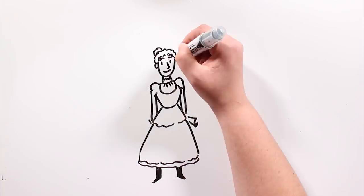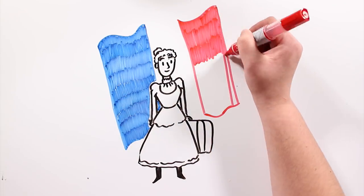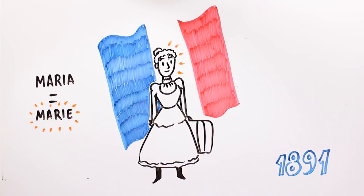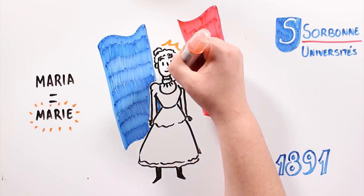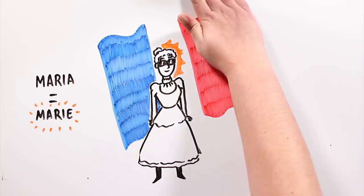As soon as she could, she left for Paris to continue her education. In 1891, she arrived to the French capital, where she changed her name to Marie. She joined the Sorbonne University, where she studied physics and math during 2 years of intense work, becoming number 1 in her year.